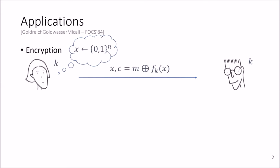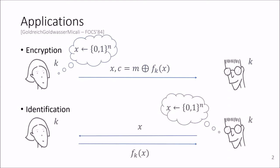Weak pseudorandom functions have many applications, for example, towards secure communication where the parties after one-time setup can use the weak pseudorandom function evaluated on random inputs as a one-time pad. They can also be used for identification, where a party can show knowledge of the shared key by replying to random challenges.